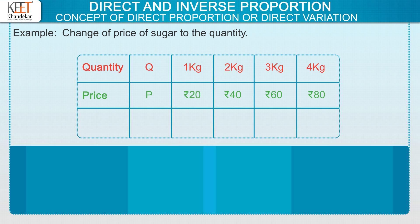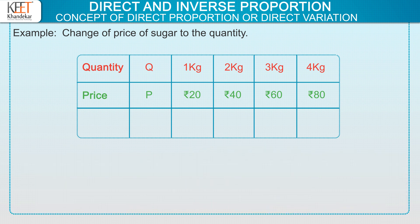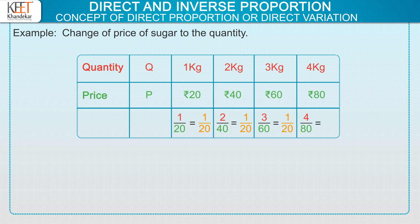Now, an important point to be noted is there is a relation between the values of quantity Q and price P. Since Q and P have direct proportion, divide the values. In the first values, we divide 1 upon 20 which equals 1 upon 20. In the second values, 2 upon 40 equals 1 upon 20. In the third values, 3 upon 60 equals 1 upon 20. And in the fourth values, 4 upon 80 equals 1 upon 20. Here we note all the values are constant. This constant is denoted by alphabet K, that is K equals Q by P.